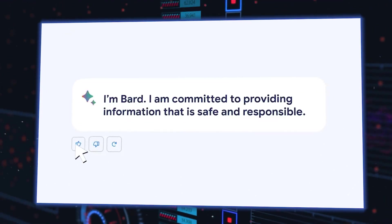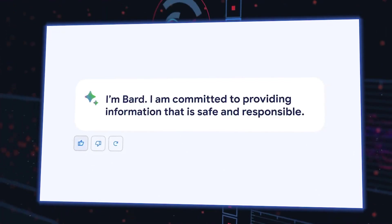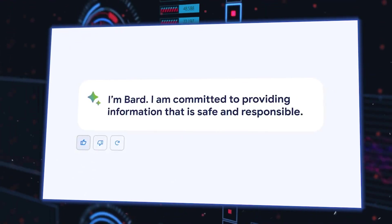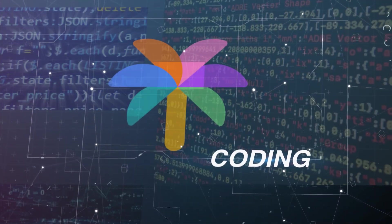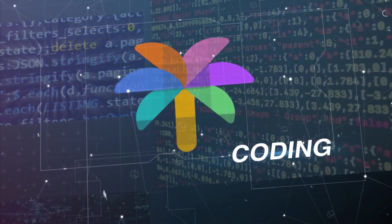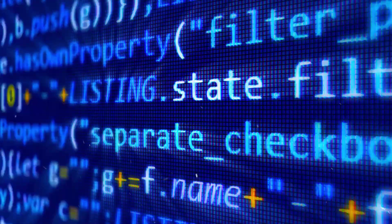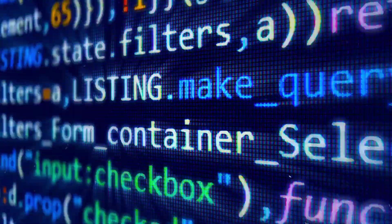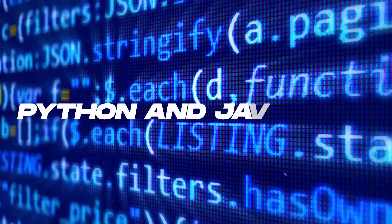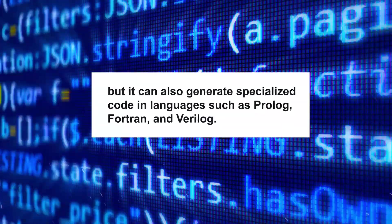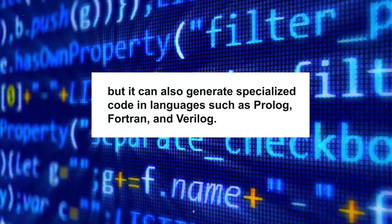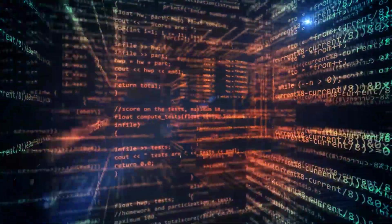When it comes to coding, PaLM 2 has been trained on a wide range of datasets, including web pages, source code, and more. This means it's not only excellent with popular programming languages like Python and JavaScript, but it can also generate specialized code in languages such as Prolog, Fortran, and Verilog. With this unique combination of language and coding abilities, PaLM 2 becomes a valuable tool for cross-language collaborations within teams.